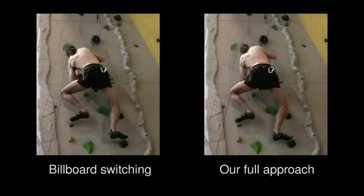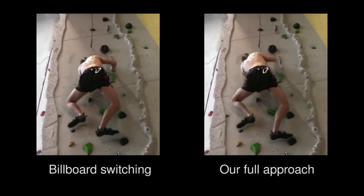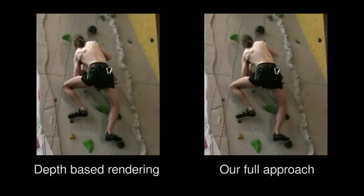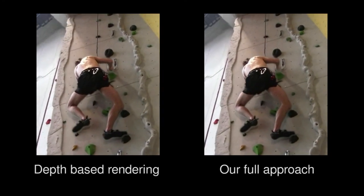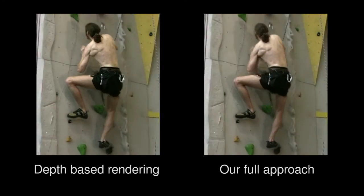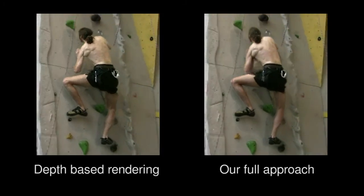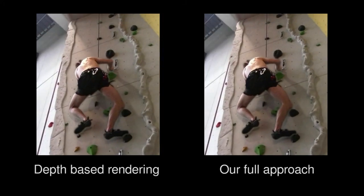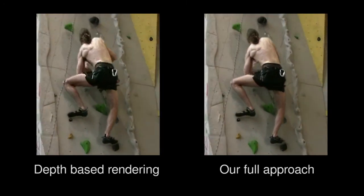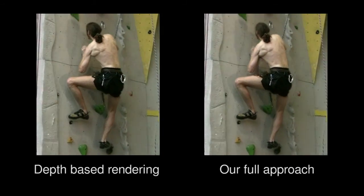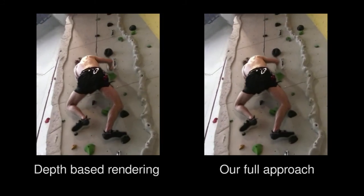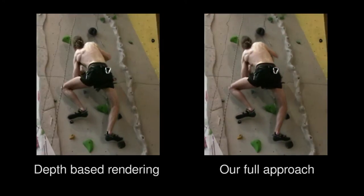Computing a rough depth map helps us to improve on this common technique, as it can be seen on the left. By applying the correspondent maps during rendering, a believable transition between images is achieved, as seen on the right.